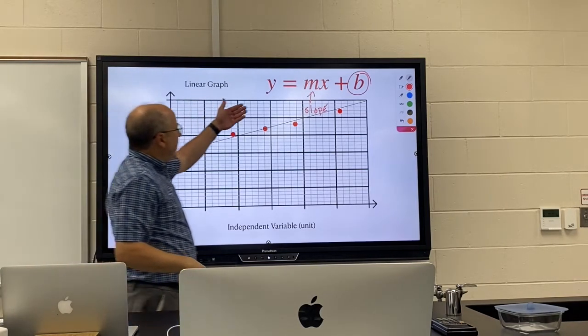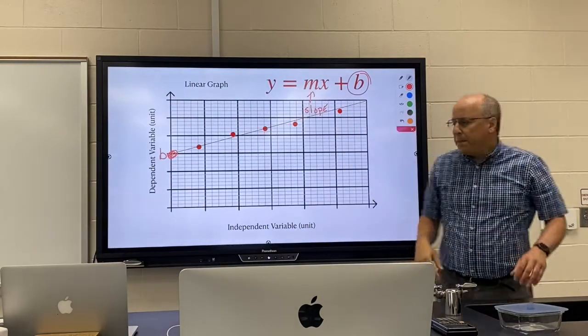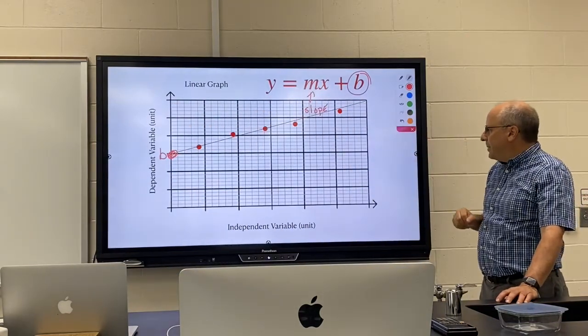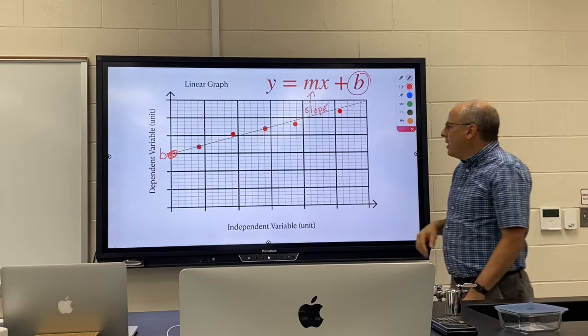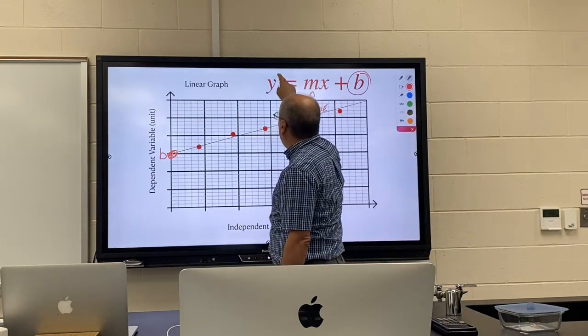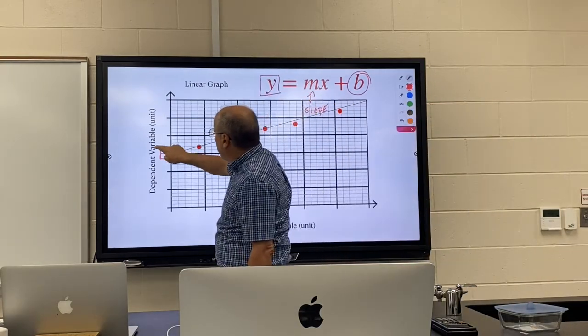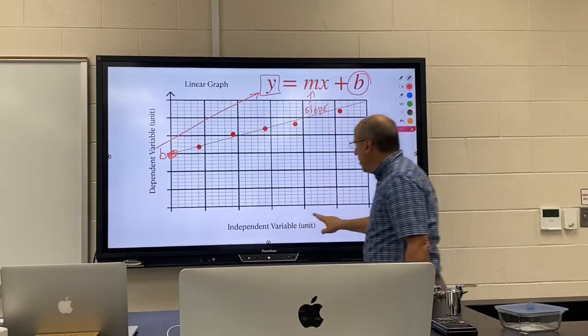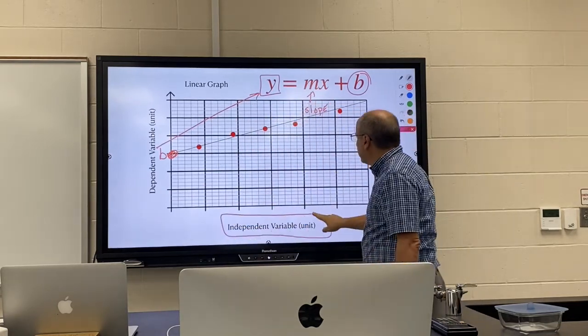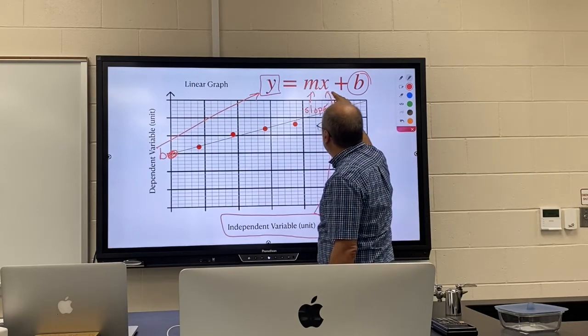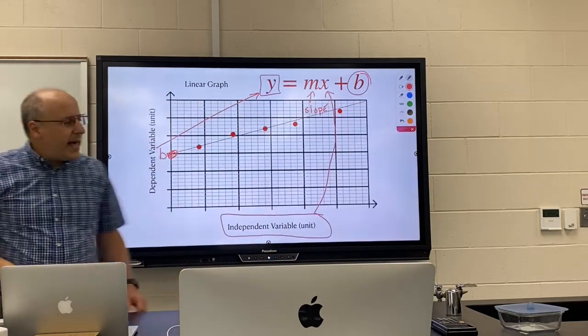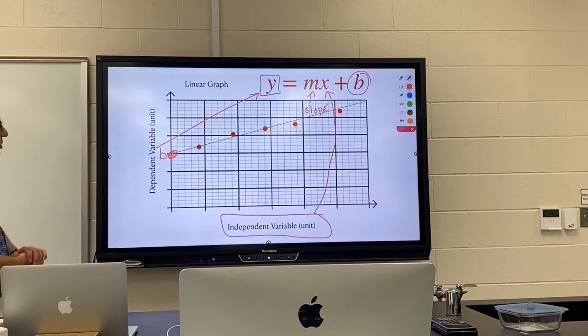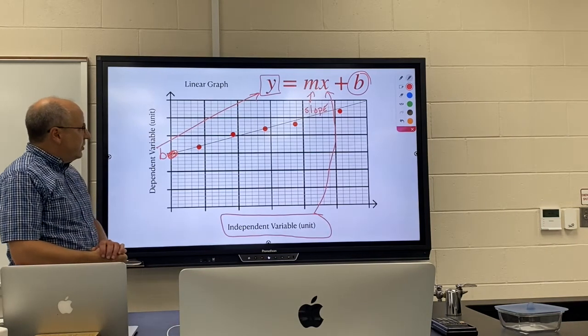The b is called your y-intercept. It's the spot where it hits the y-axis. So then you'd have y equals mx plus b—the m is the slope and the b is the intercept. Now in real life, do not call it y. Whatever is on the y-axis should go in this spot. Whatever's on the x-axis, that should go in where the x is. So the x and the y are placeholders for the values on your graph.